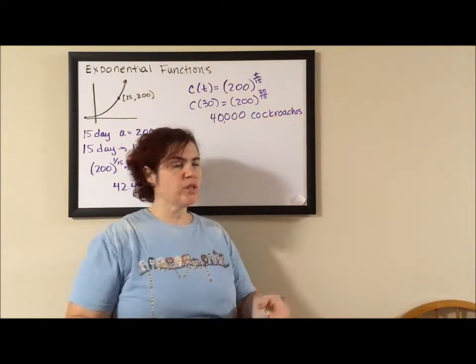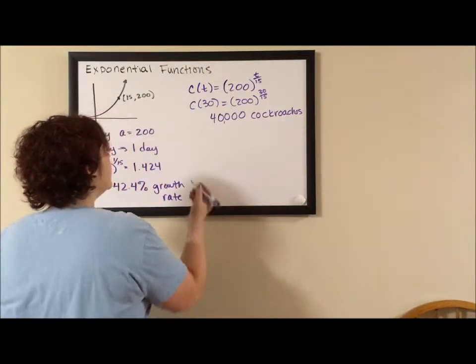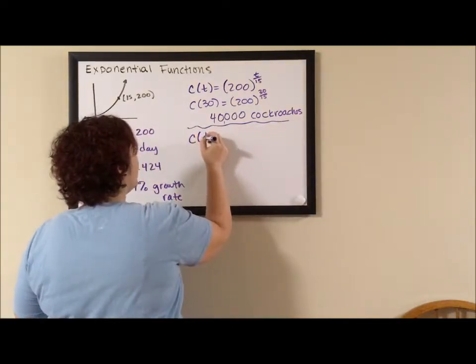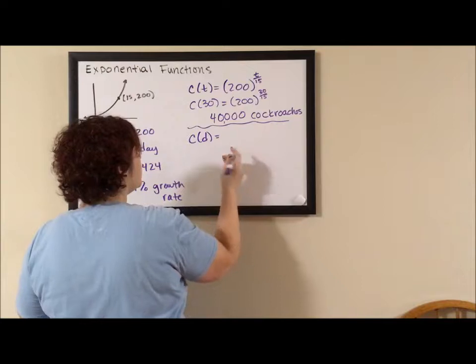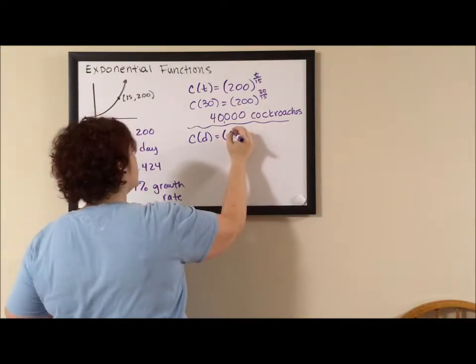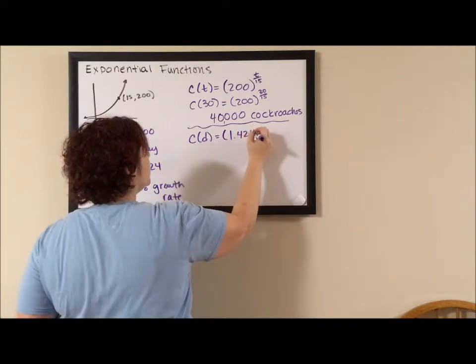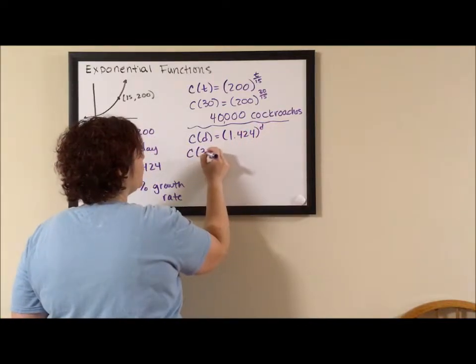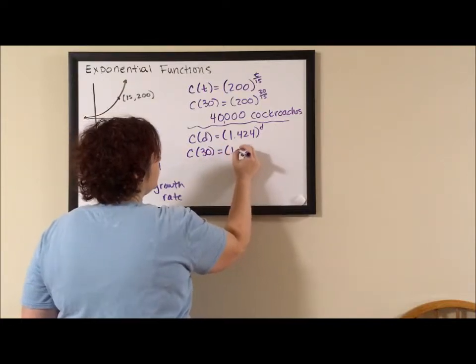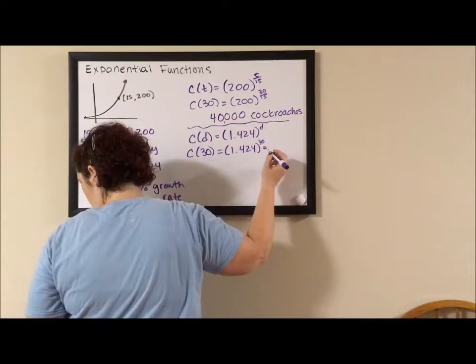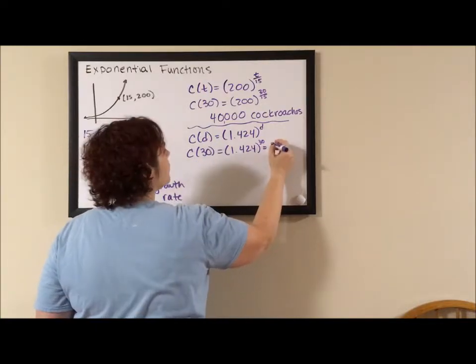Now remember these are all estimations. So if we did the cockroaches per day, we still start with one, but then our growth factor is this 1.424 per day. So cockroaches after 30 days is 1.424 to the 30, which is going to equal 40,300.